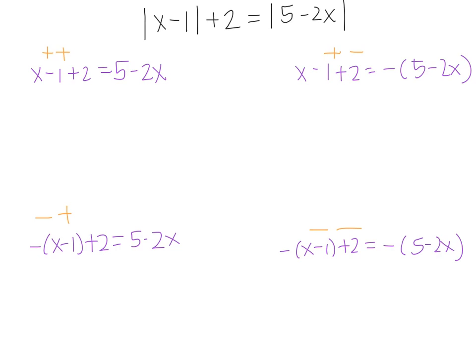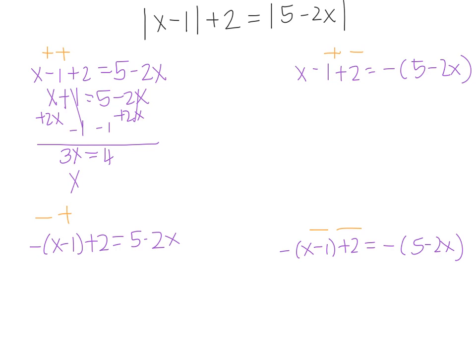Back to the first equation. I can combine like terms, so we'll have x plus 1 is equal to 5 minus 2x. Add 2x to both sides, subtract 1 from both sides. So I have 3x is equal to 4, and then x equals 4 thirds.